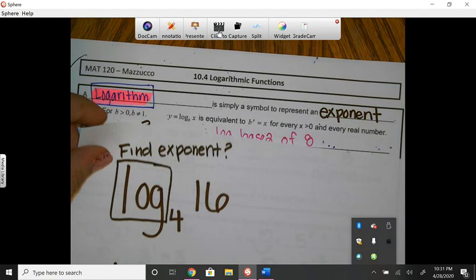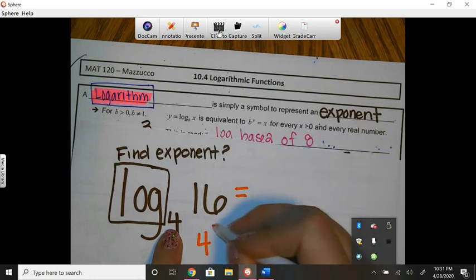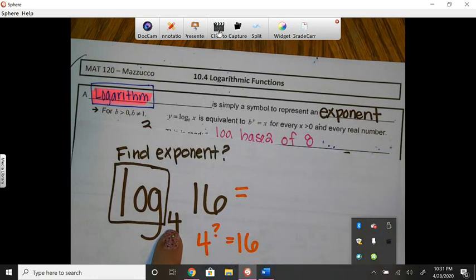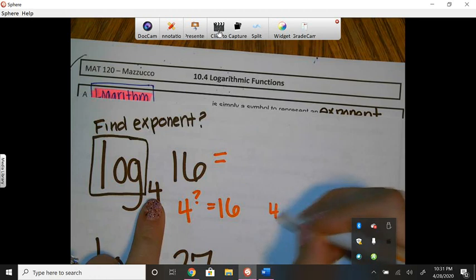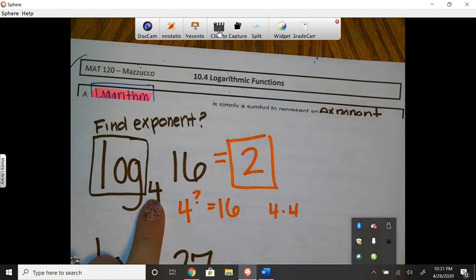Okay. So, for example, over here, this is saying 4 to what power would get you 16? Well, 4 times 4 is 16, so the answer would be 2. So 4 to the second power gets you 16.